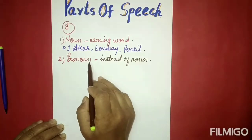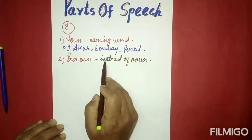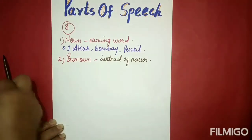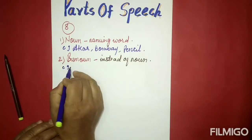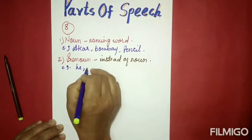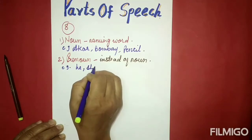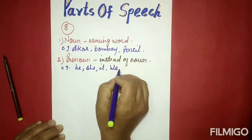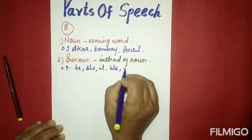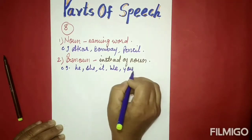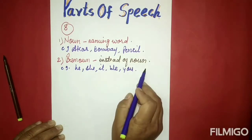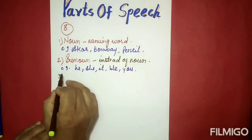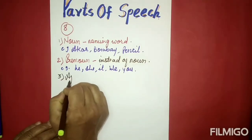A pronoun is a word used instead of a noun. For example: he, she, it, we, they, you — these all are pronouns. Now the third part of speech we'll see is adjective.